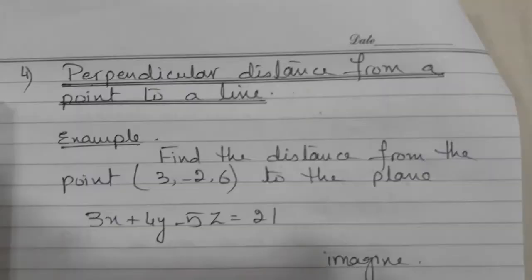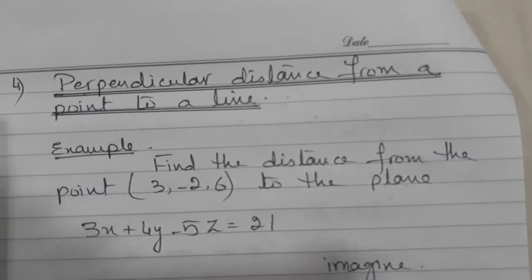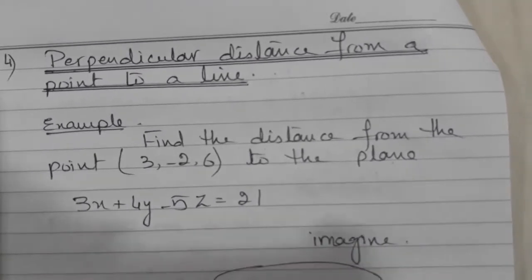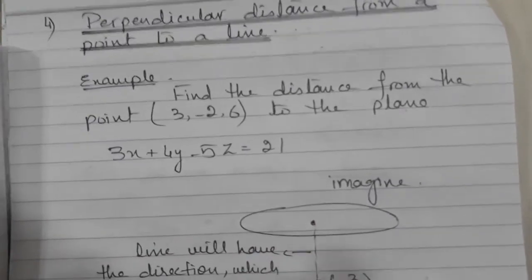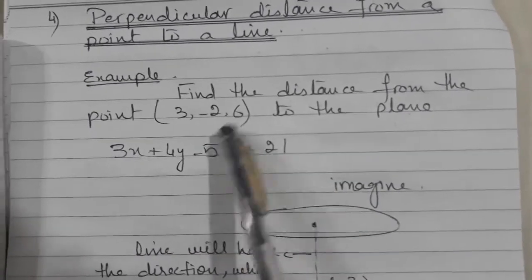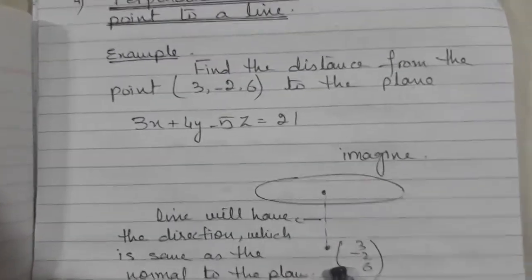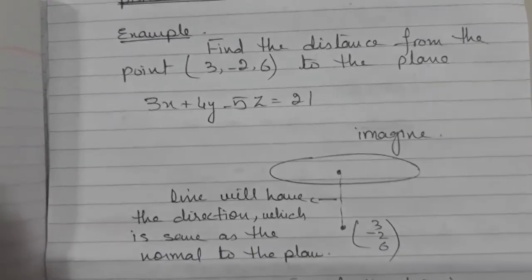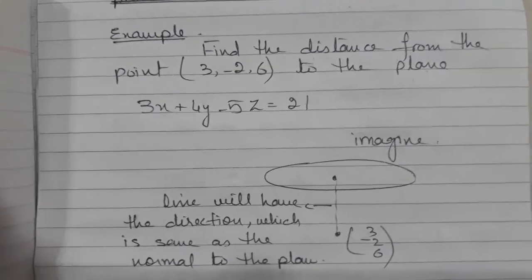Now we will see how to find the perpendicular distance from a point to a plane. Let's see an example: find the distance from this point to this plane. Imagine this is my plane and this is the point. By the way, if it is written distance, it means perpendicular distance, which means shortest distance.